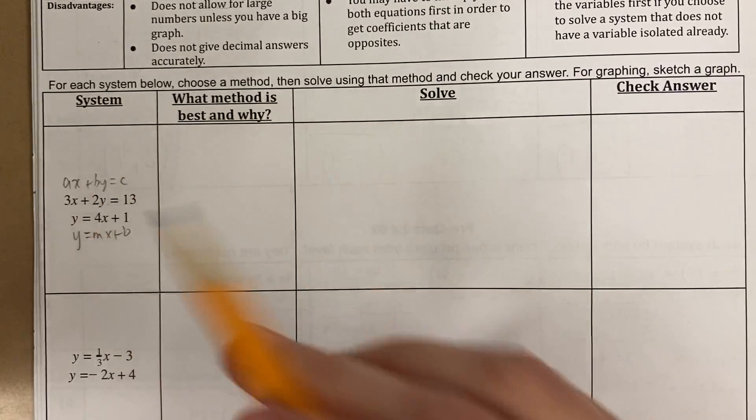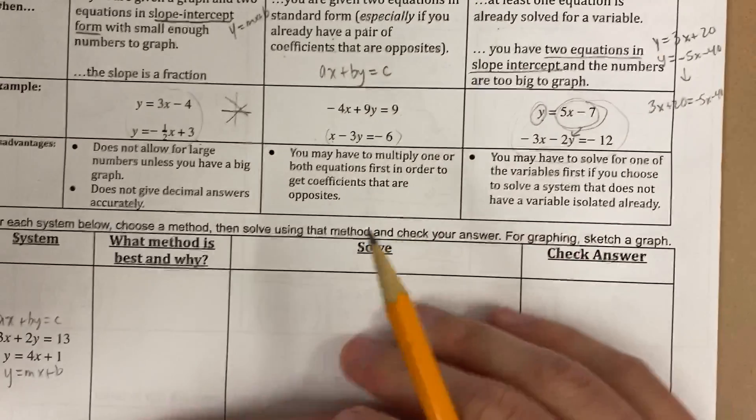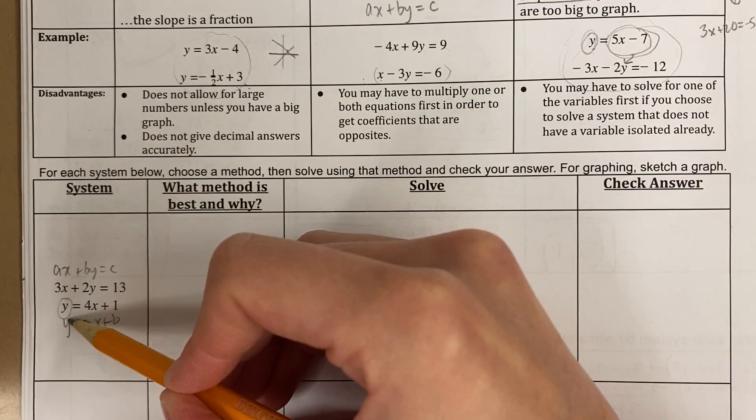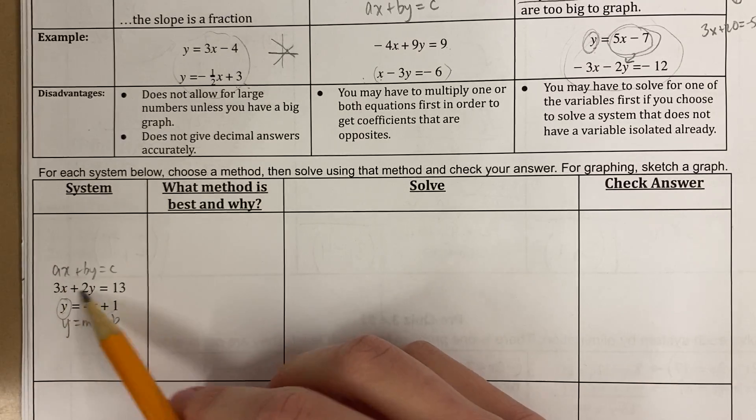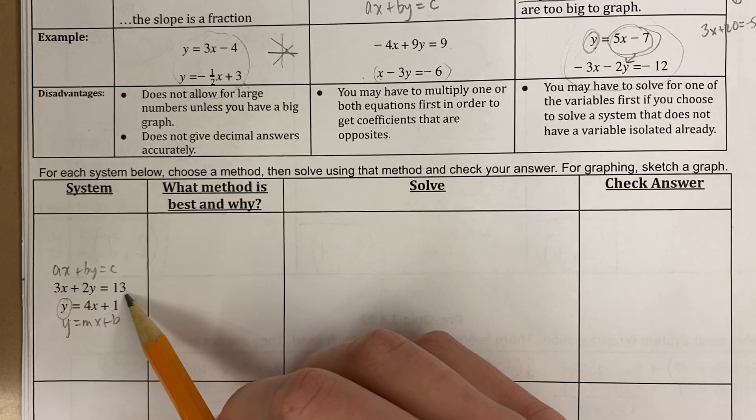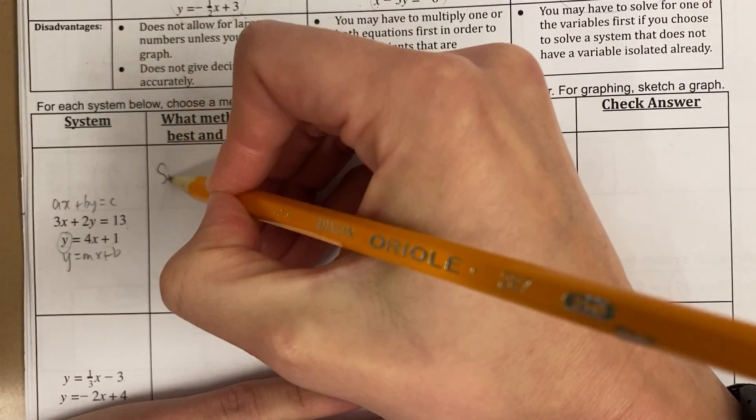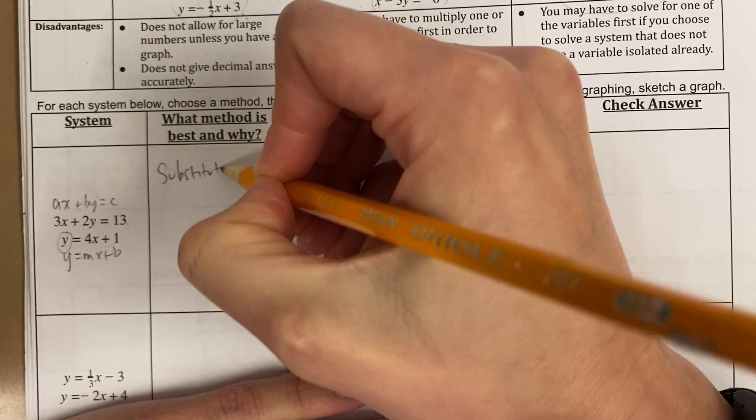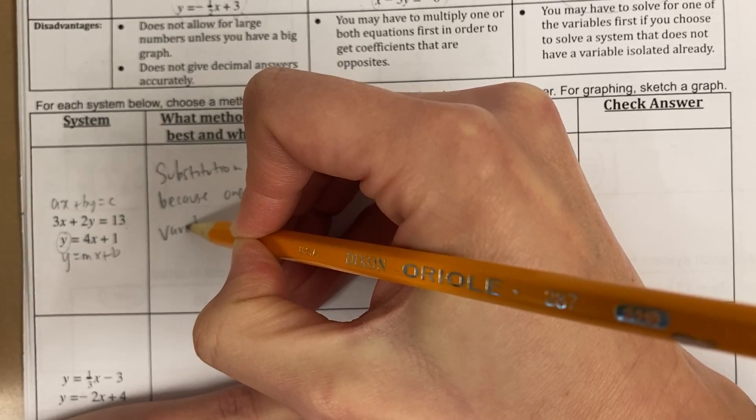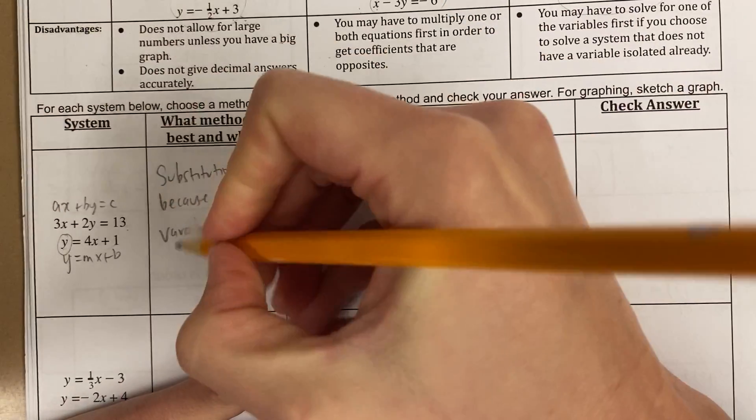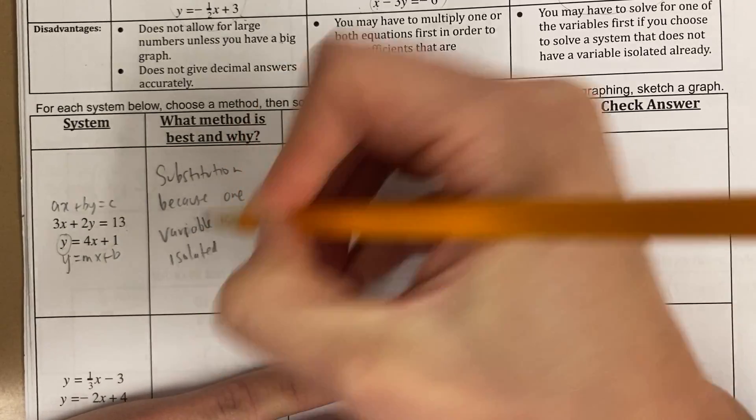And so this is a great candidate to use substitution, because one of the equations is already solved for a variable. This y is already by itself. And in the other equation, I could graph this, but standard form's a pain to graph. I like to use elimination when I have two equations in standard form. So this is a great one for substitution because one variable is already isolated.